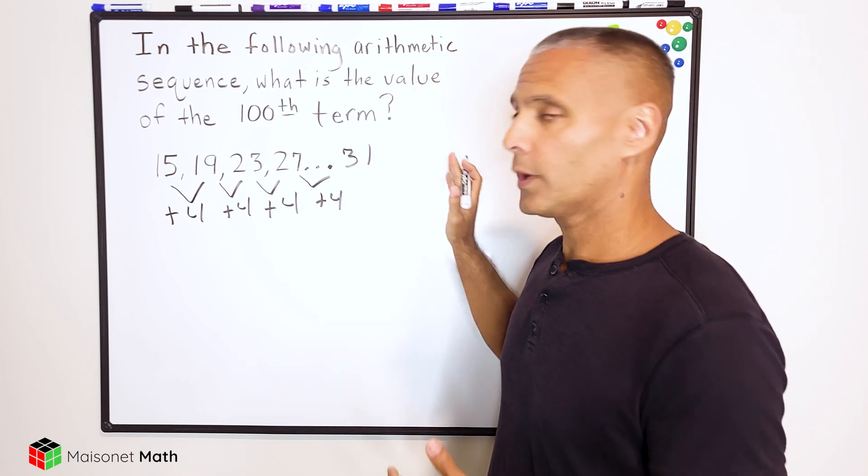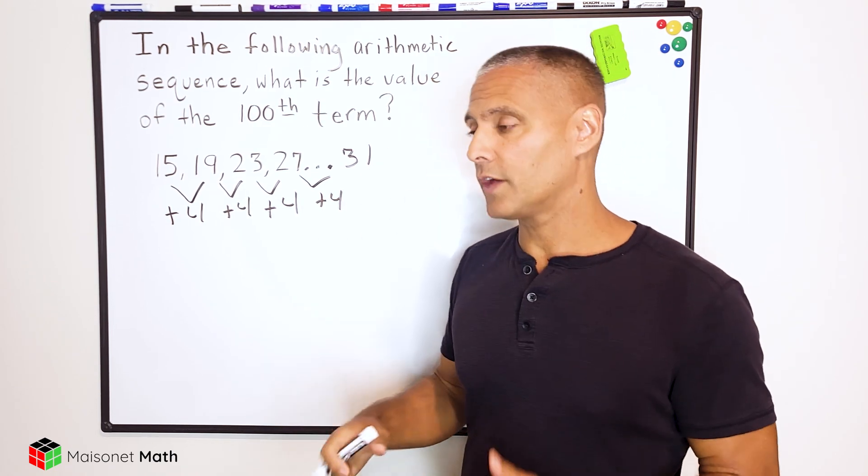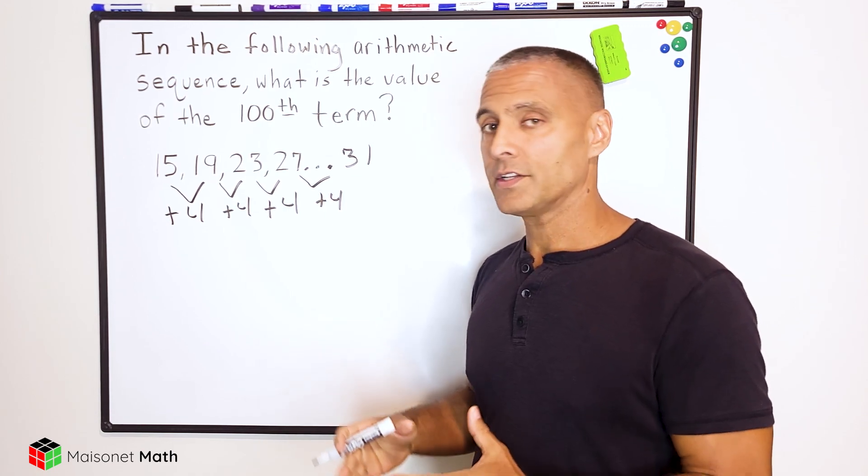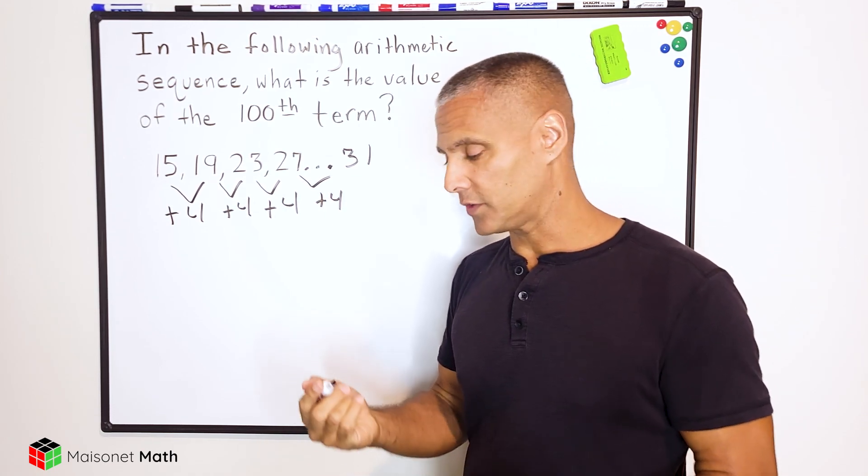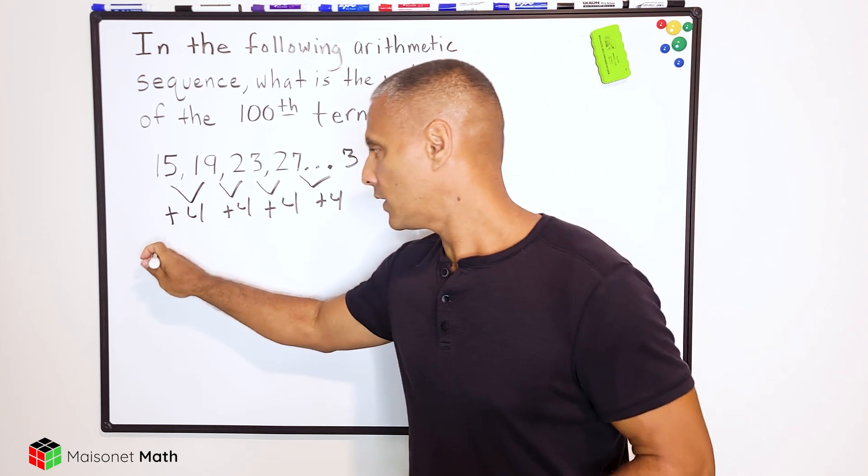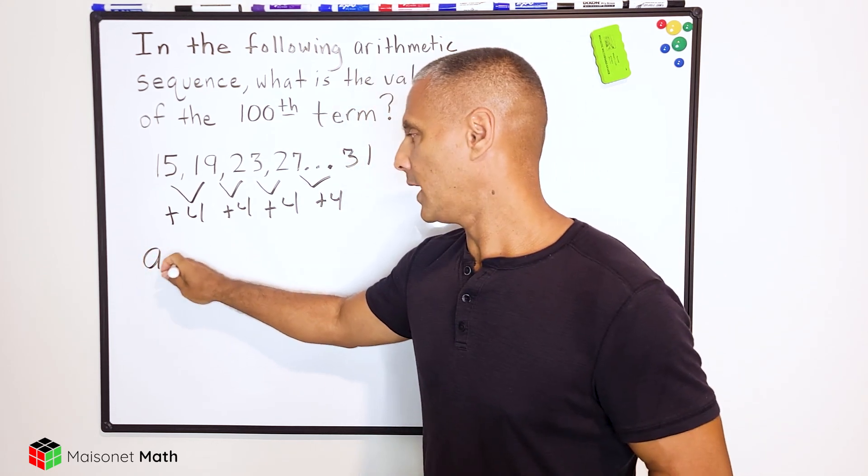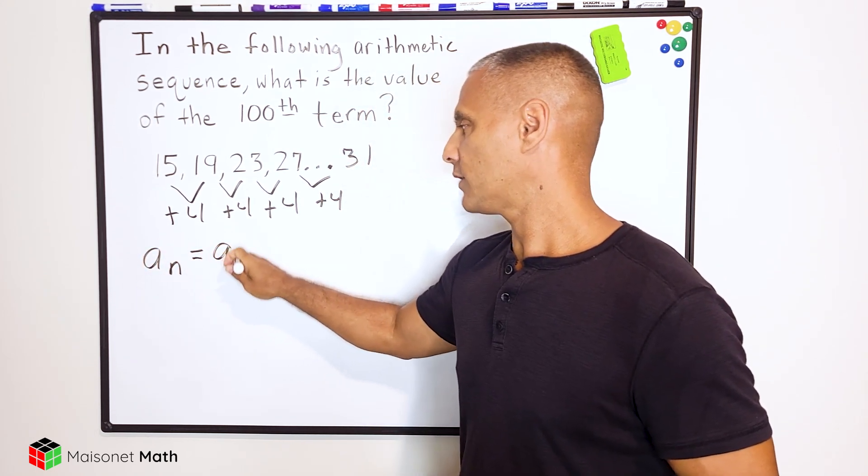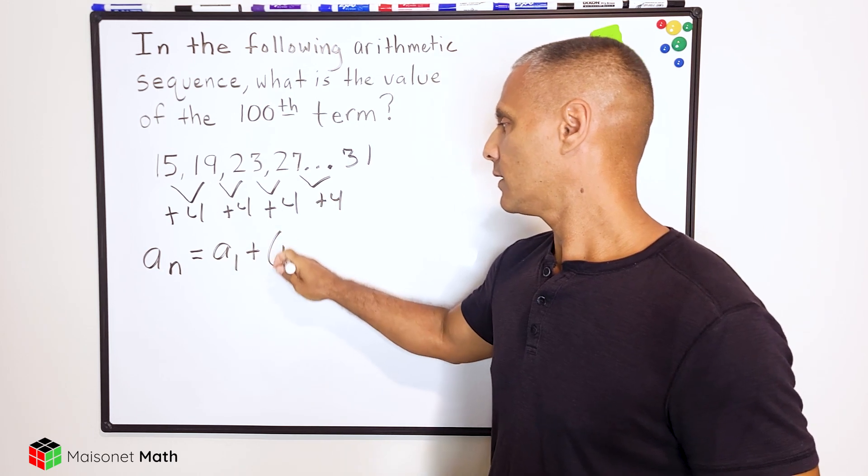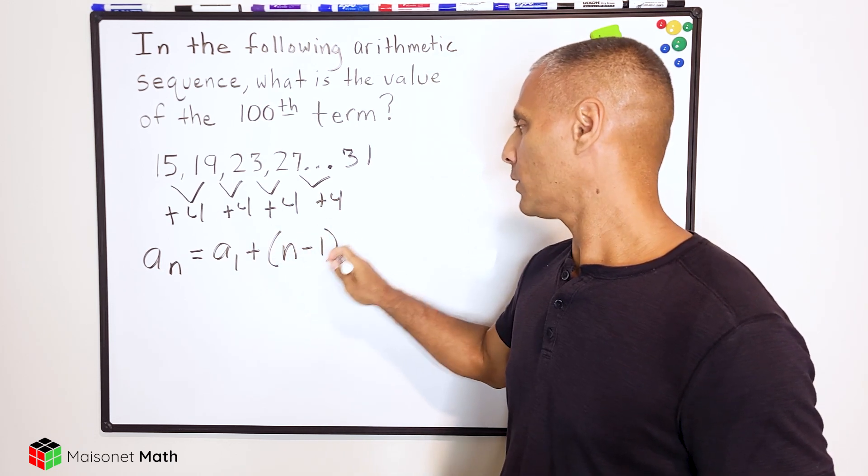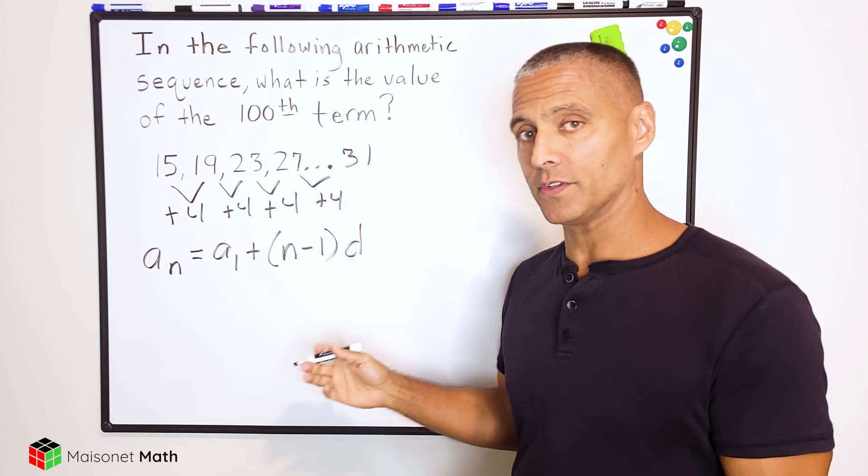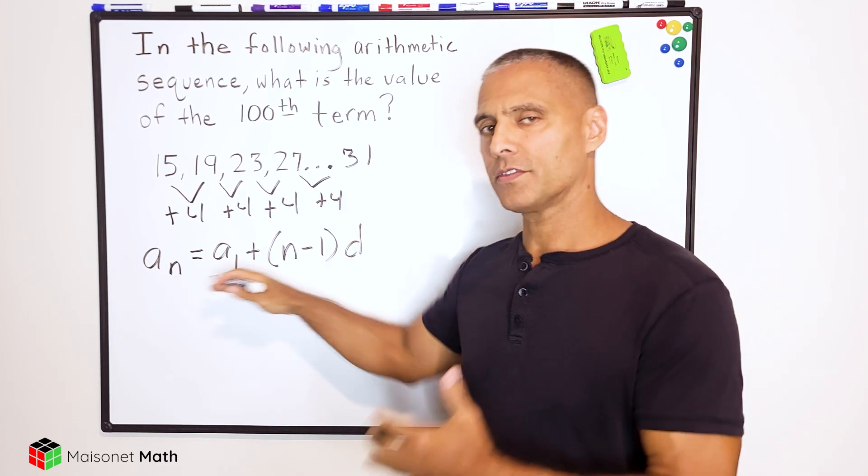Now we could keep adding four until we hit the hundredth term, but that would take quite a while. So what we're going to do is take advantage of an equation that does it for us. So that equation is a sub n equals a sub 1 plus n minus 1 multiplied by d or the common difference. Now let's talk about this equation for a moment.